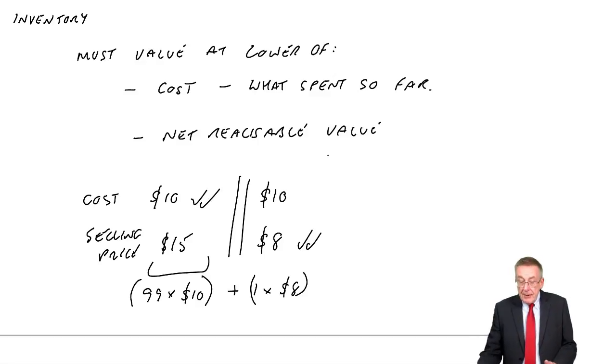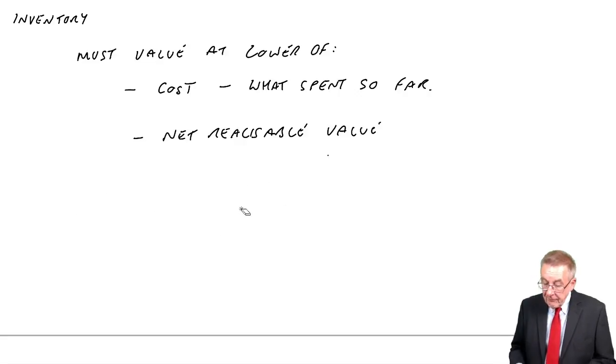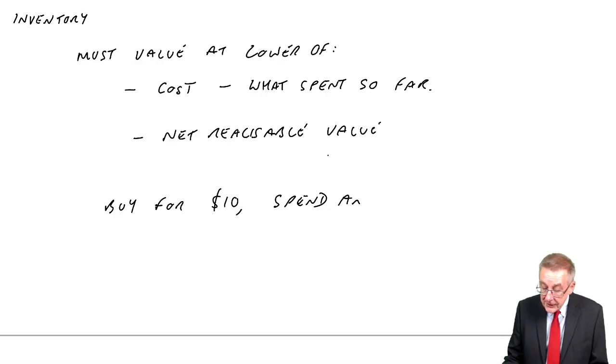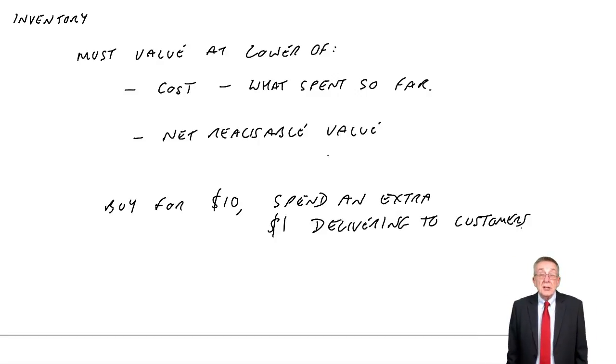What I mean by that is that maybe my desks, maybe the desks I buy for $10, we then spend an extra $1 delivering to customers. So ultimately, it's costing me $11. But at the date of the statement, if these desks are in inventory, I've spent the $10 to buy them. I haven't yet spent the other dollar.